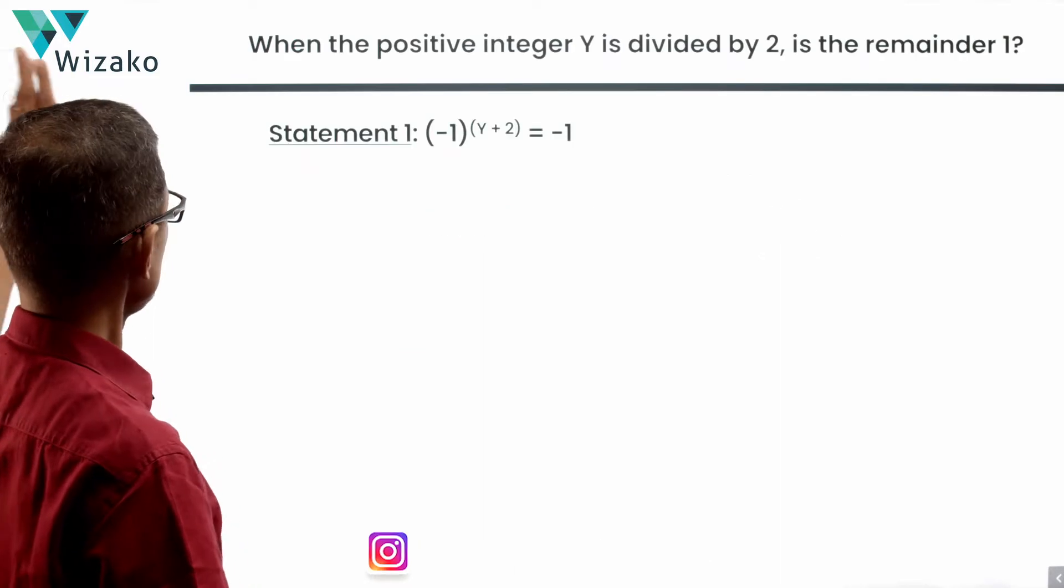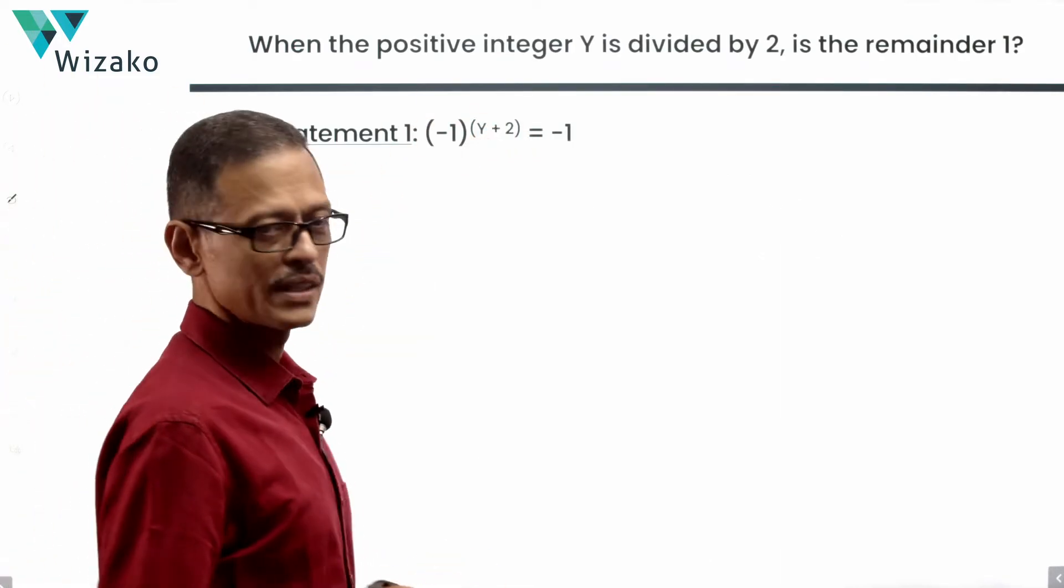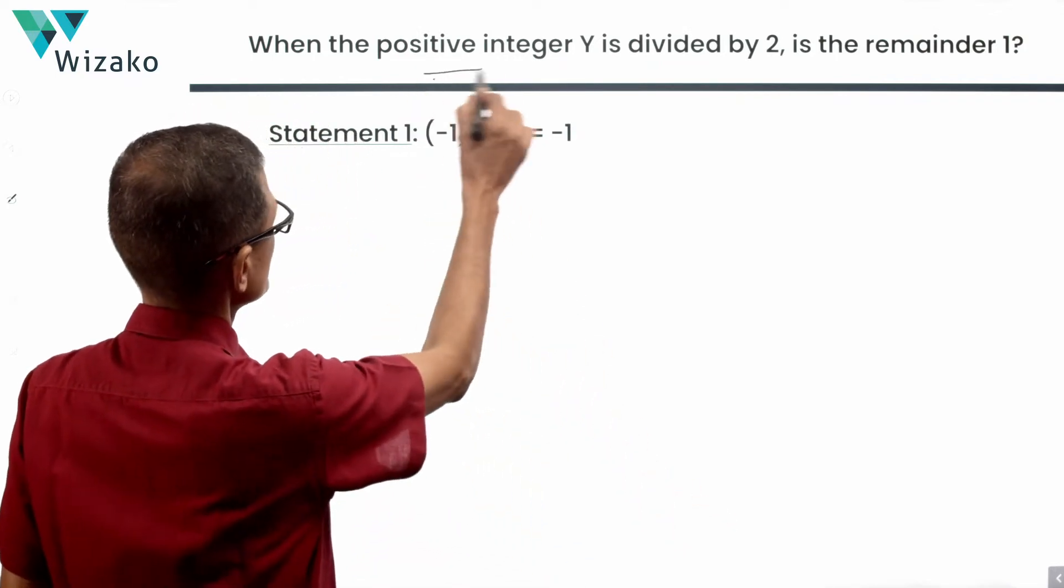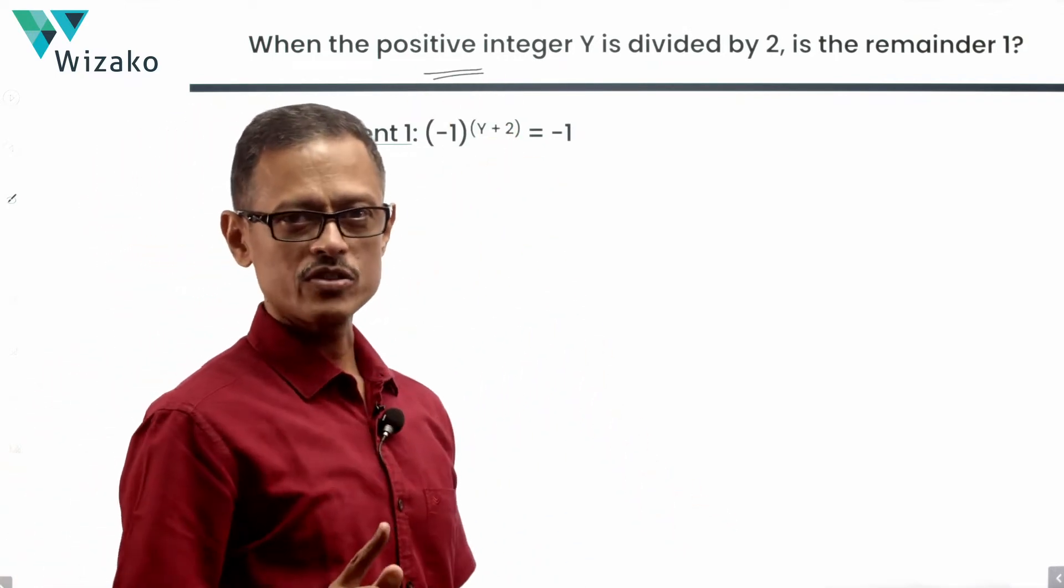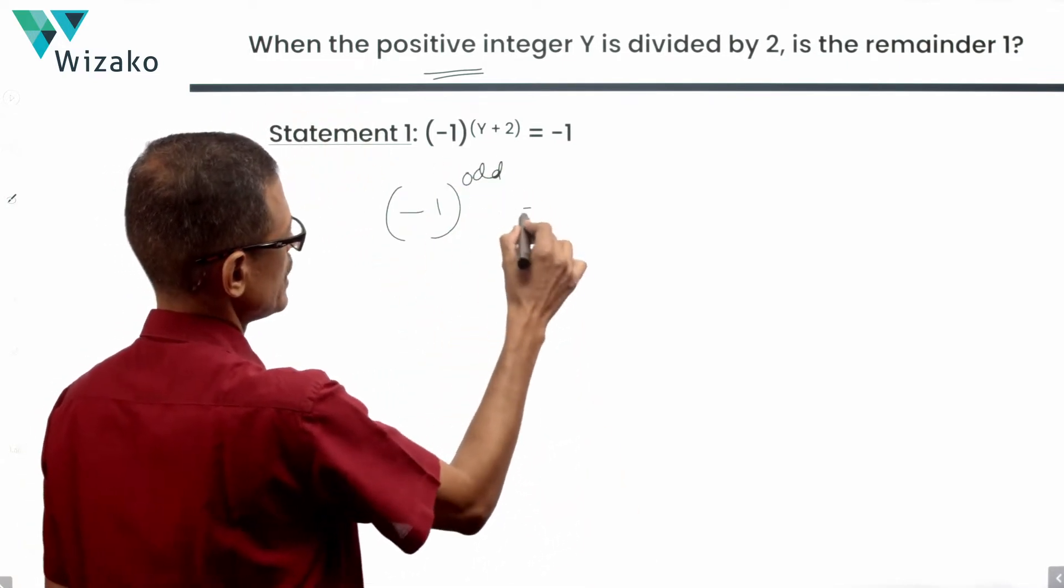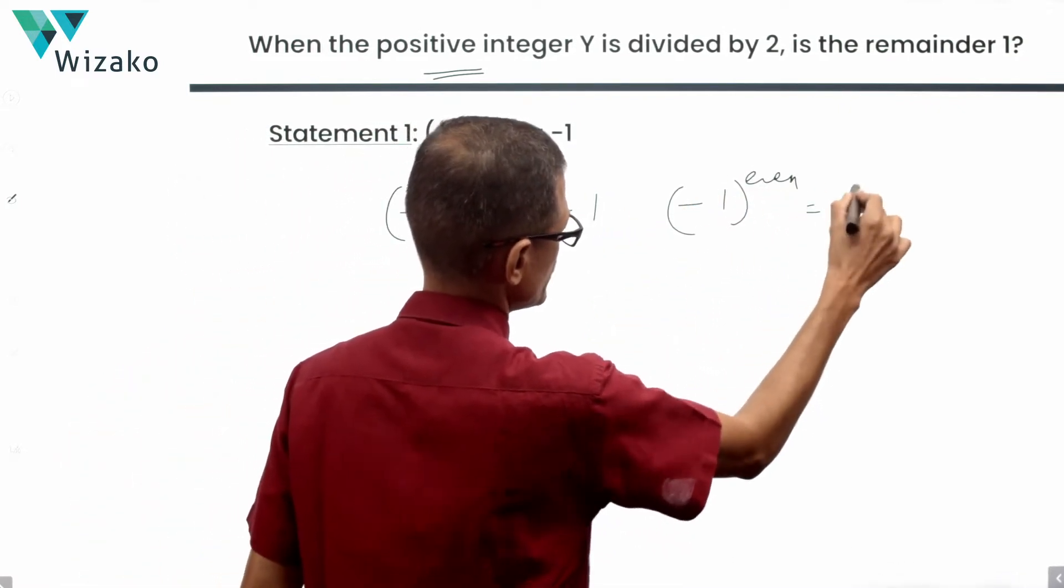Quickly get into statement 1. Statement 1 says (-1)^(Y+2) = -1. Look at it. We know Y is a positive integer. So Y plus 2 is certainly going to be a positive integer.